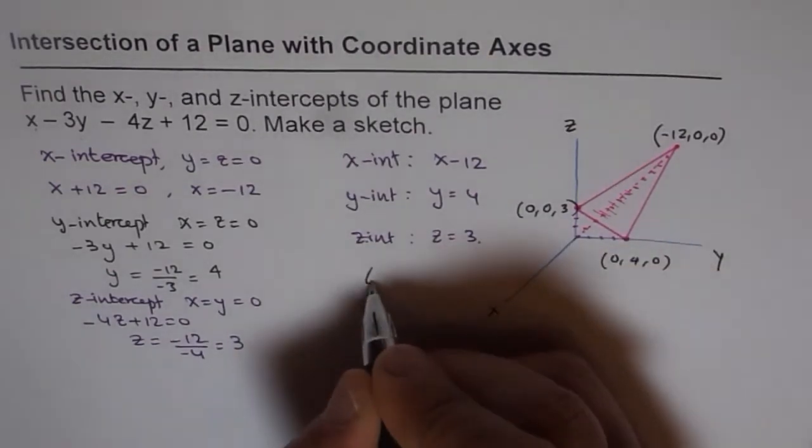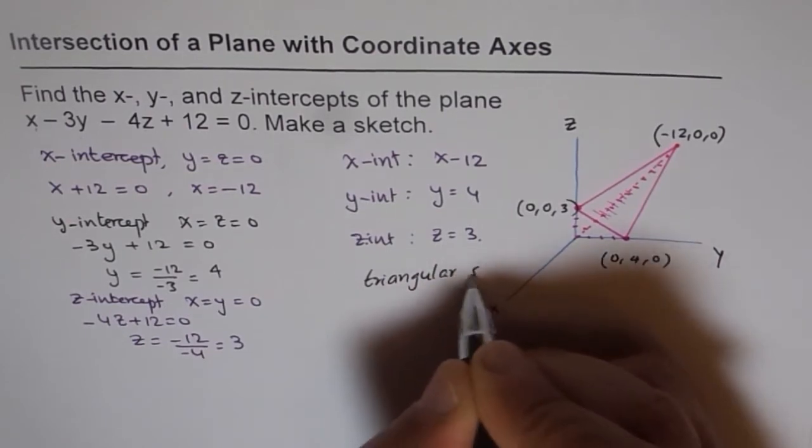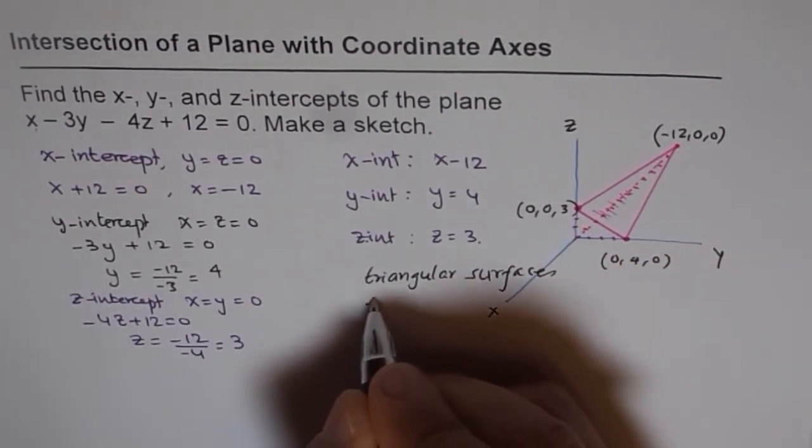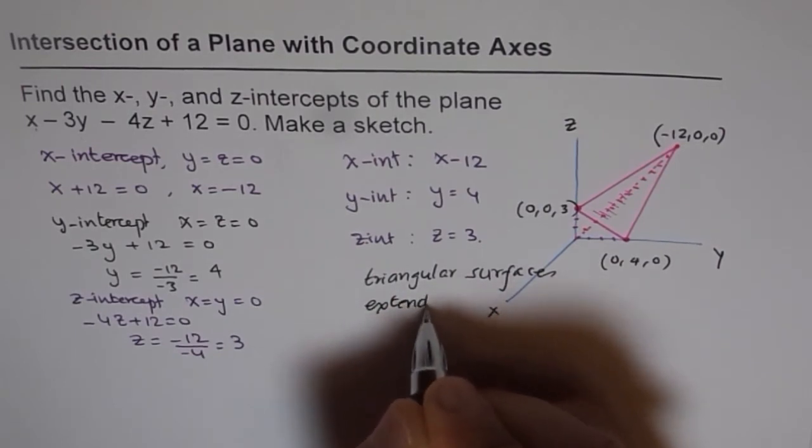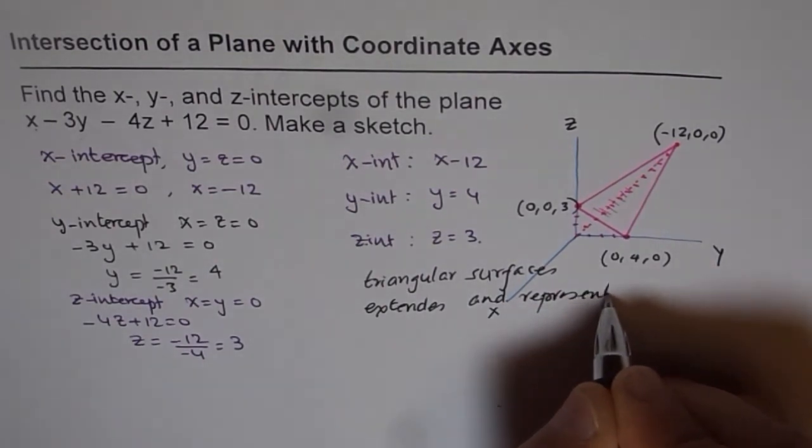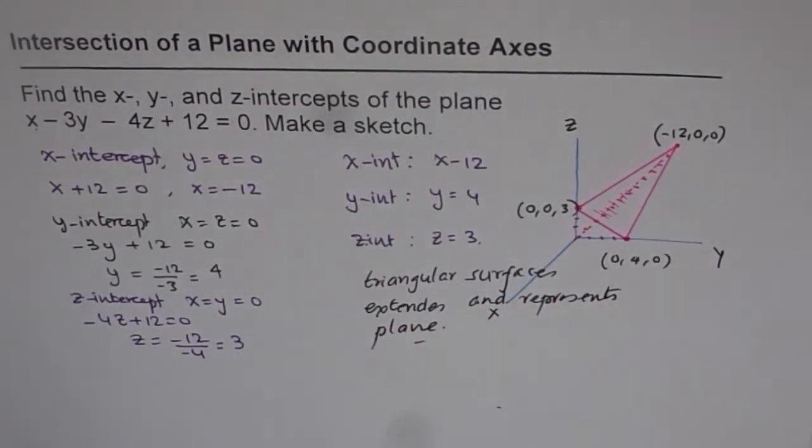So we have this triangular surface which extends in all directions and represents the plane for the given equation.